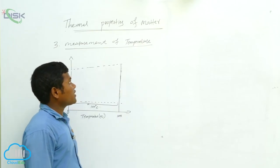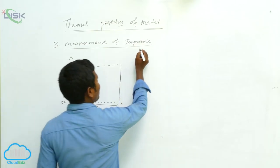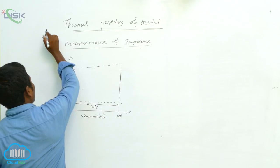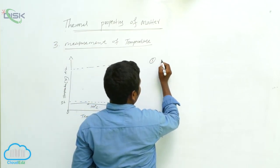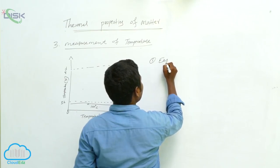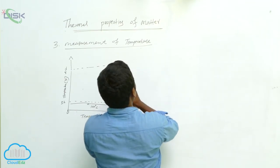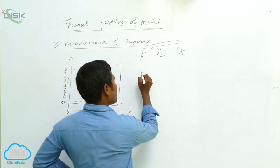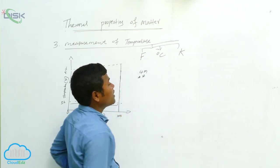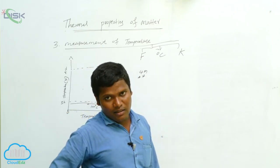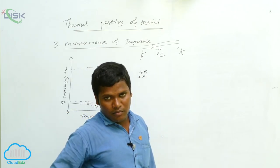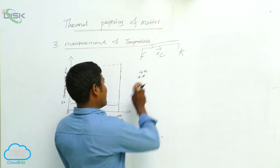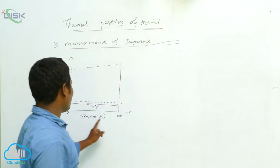For measurement of temperature, there are three scales. The first one is Fahrenheit, the next one is degree Centigrade, and the next one is Kelvin. These are the three major scales for measuring temperature: Fahrenheit, degree Centigrade, and Kelvin.